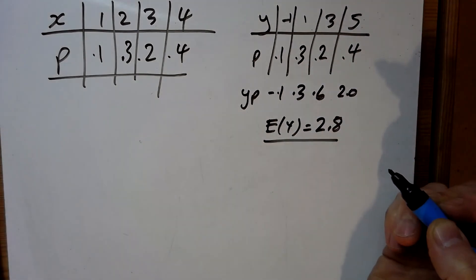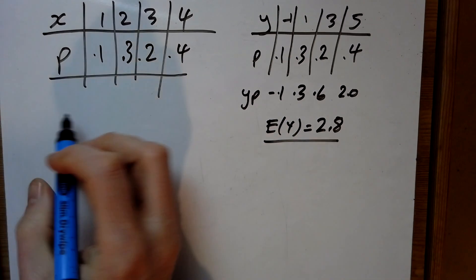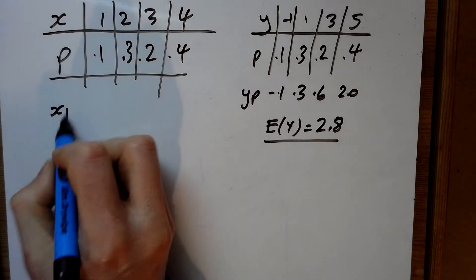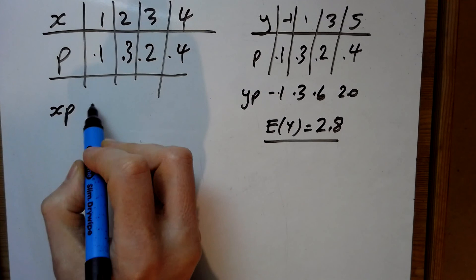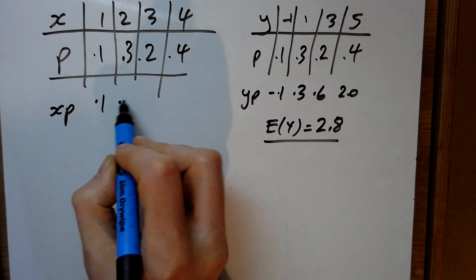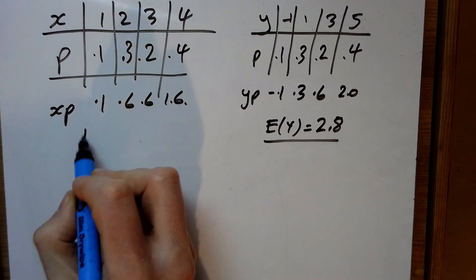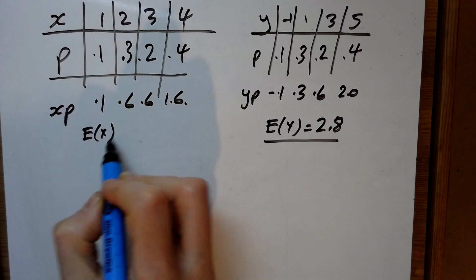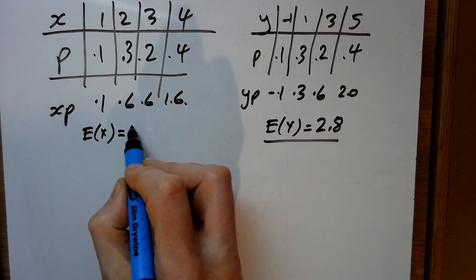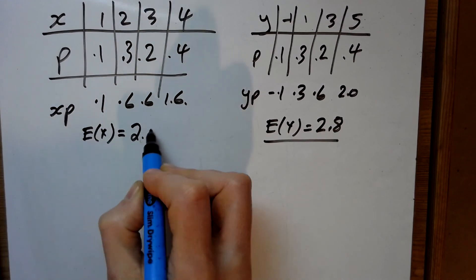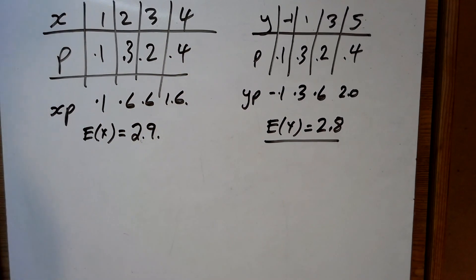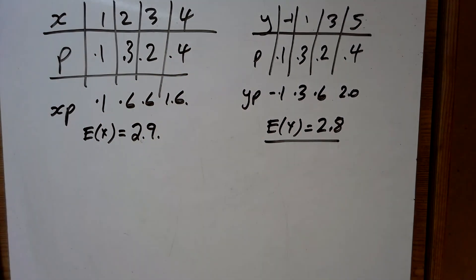Do we have to find out the expected value of y squared? No, but we have got to find out the expected value of x as well. So we'll do the xp column here, that's 0.1, 0.6, 0.6 and 1.6, so the expected value of x here is 2.9.